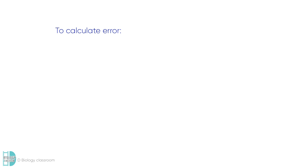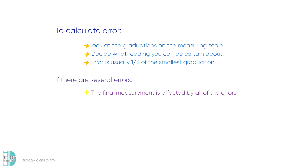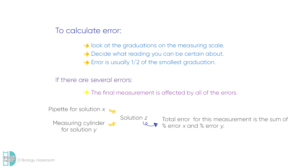In conclusion, when you want to calculate the error when using different measuring instruments, look at the graduations on the measuring scale. Decide what reading you can be certain about. Usually, the error is half the size of the smallest graduation. If there are several errors in measurement, the final answer you reach will be affected by all of the errors. For example, if you use a pipette and a measuring cylinder to measure two different solutions to make a final solution, you can assume that the total error is the sum of each of the individual percentage errors.